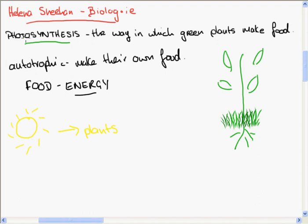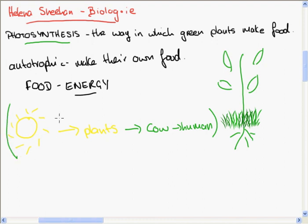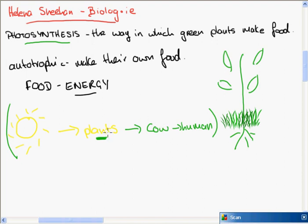Animals, on the other hand, need to eat the plant. For example, a cow might eat the grass, and a human might eat the cow — a very simple food chain. The plant takes the energy from the sun and turns it into food for itself; it's not making the food for the cow. But the cow has figured out that if it eats the plant, it can get energy, and the human can eat the cow, and so on.